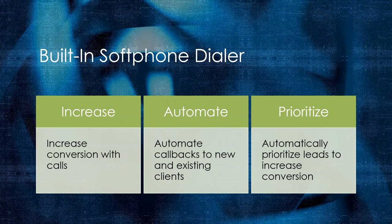My favorite feature — and this is something people have an issue with across multiple industries — is when somebody answers and says, 'Oh, I can't talk right now. Can you call me back at five?' Nobody remembers to call that person back at five. You have a lot of other stuff going on, and by the time you remember, it's too late. With Law Ruler's dialer, it gives you an option to schedule a callback at a specific time, and it'll pop up that call at that time so you'll never forget.